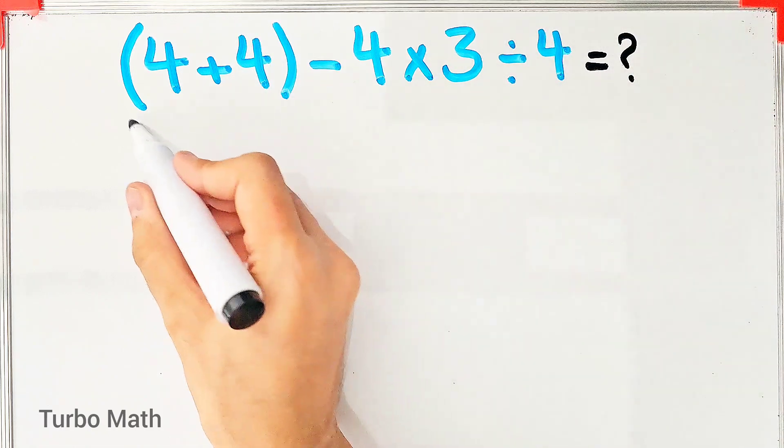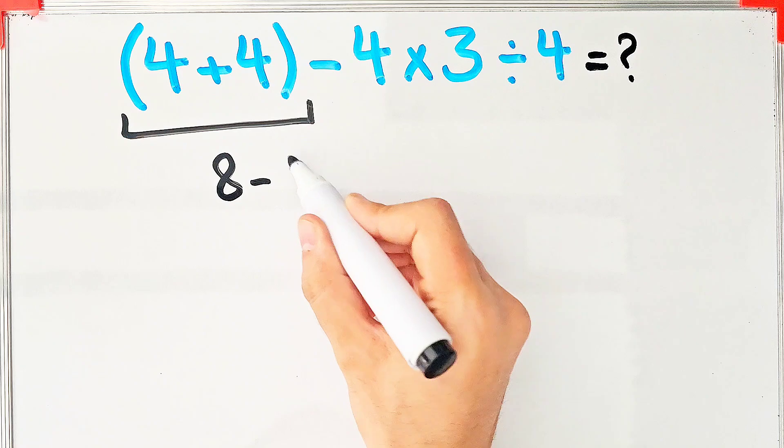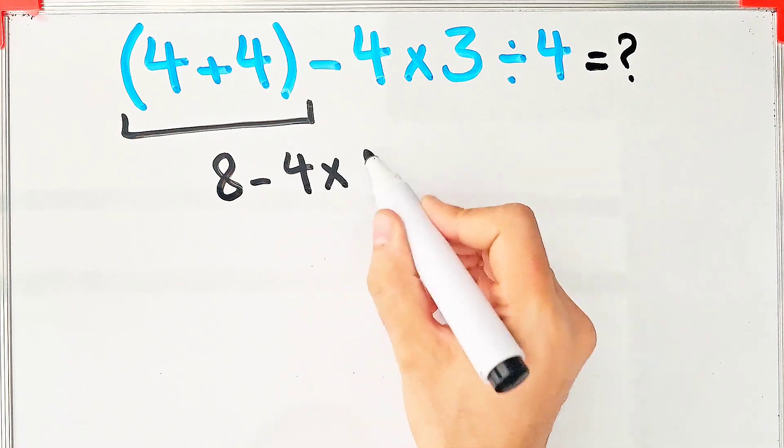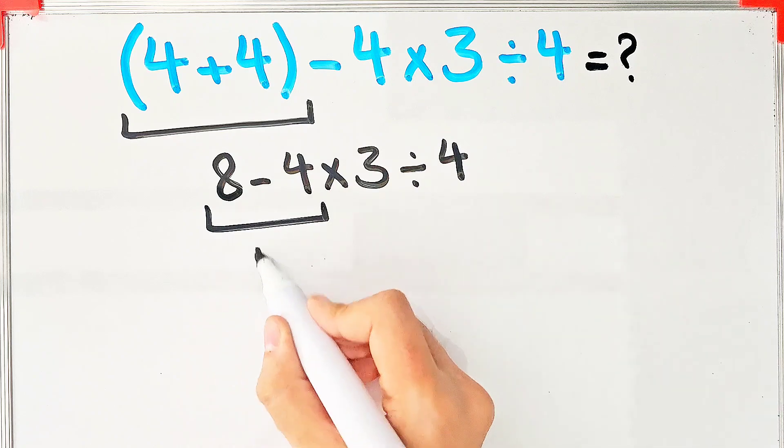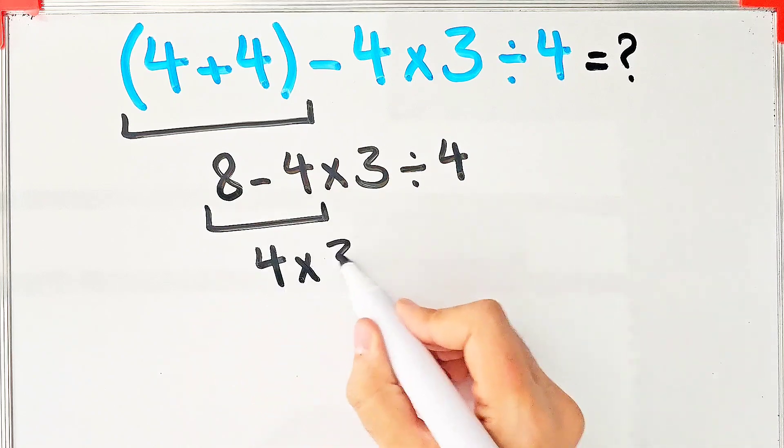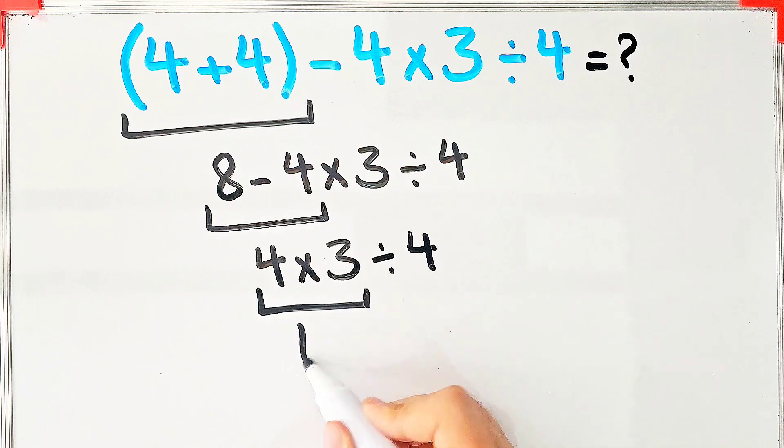4 plus 4 equals 8. 8 minus 4 times 3 then divided by 4. 8 minus 4 equals 4. 4 times 3 then divided by 4. 4 times 3 equals 12 and 12 divided by 4 equals 3.